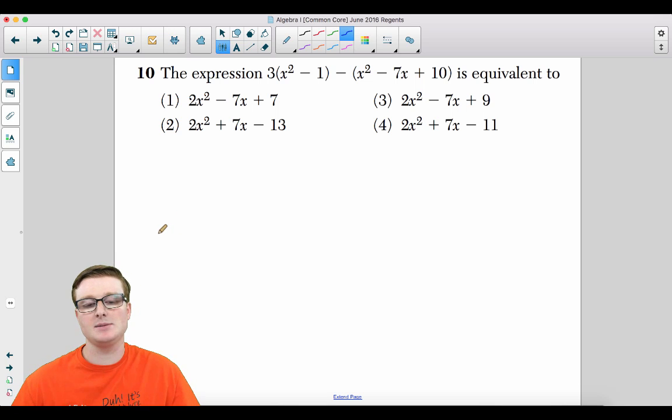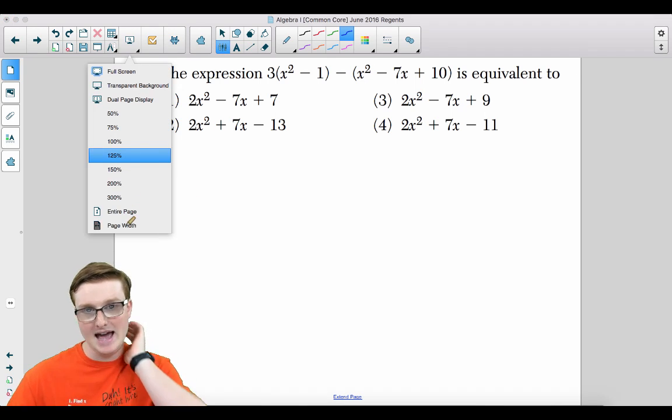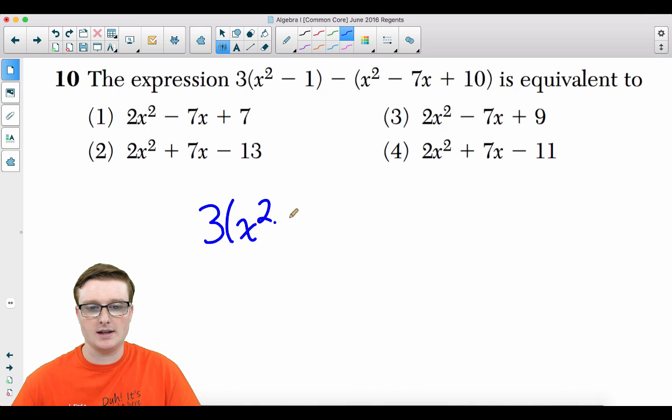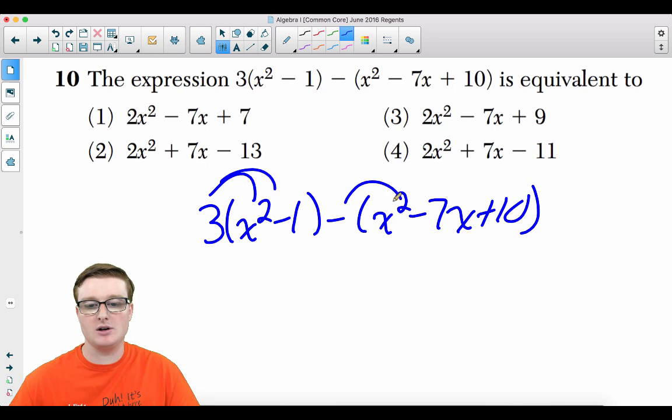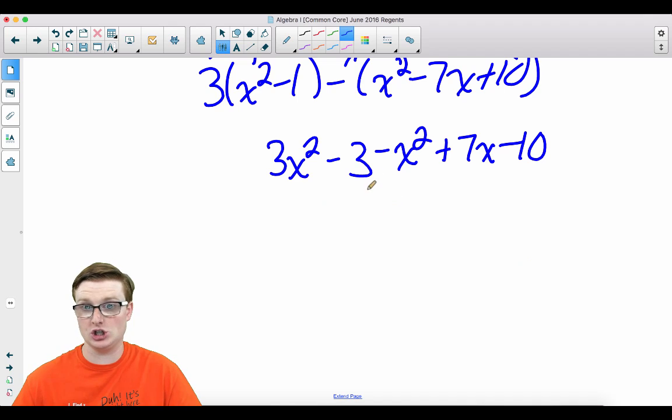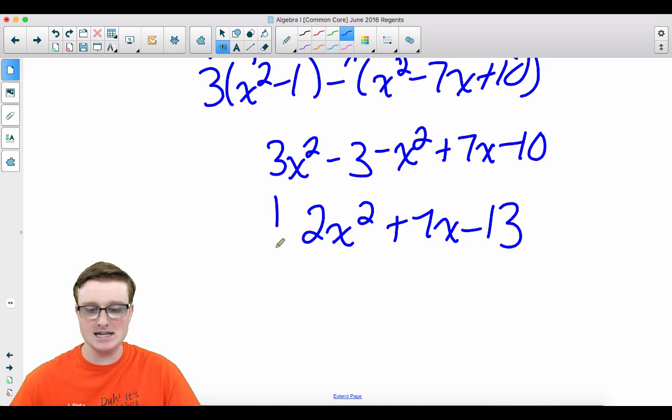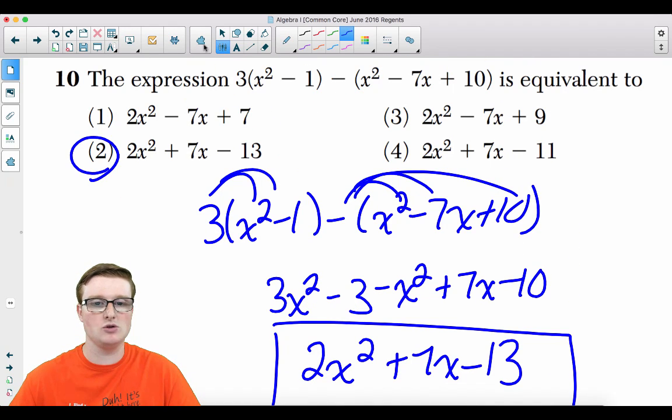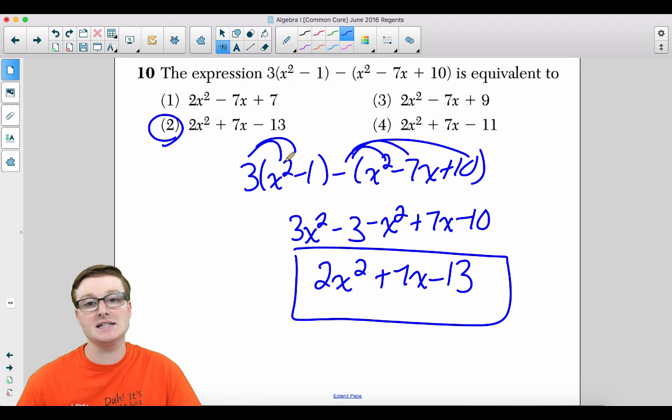Moving on to number 10. The expression 3 times x squared minus 1 minus in parentheses x squared minus 7x plus 10 is equivalent to what? You're just going to simplify this as much as you possibly can. We're going to distribute that 3 and we're going to distribute that negative 1. So we get 3x squared minus 3 minus x squared plus 7x minus 10. Now we just simplify it to its lowest terms. So now we get 2x squared plus 7x minus 13. That is your answer, choice 2. That's just by basic distribution, combining like terms and simplifying.